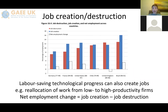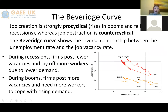Labour-saving technological progress can also create jobs. However, around 50% of jobs globally could be automated away in the next few years, posing a challenge to many currently in the workforce who lack the ability to move to a role far from the reaches of cheaper, more effective labour-saving technology. Job creation is strongly pro-cyclical, whereas job destruction is counter-cyclical. The Beveridge curve shows the inverse relationship between the unemployment rate and the job vacancy rate. During recessions, firms post fewer vacancies and lay off more workers due to lower demand. During booms, firms post more vacancies and need more workers to cope with rising demand.